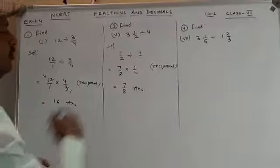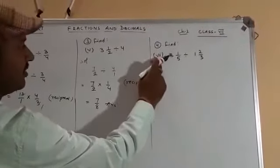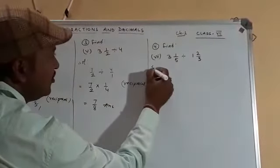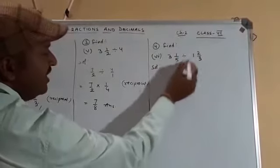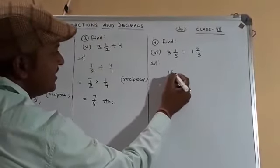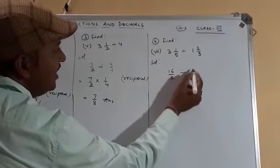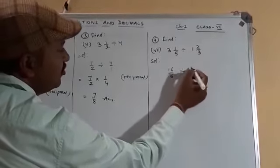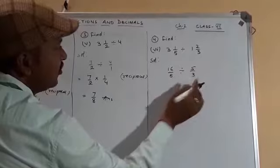Coming to the next part. Solution: convert mixed fraction to improper fraction. 3 times 5 equals 15, plus 1 equals 16, so 16 upon 5, divided by 2 2/3. Convert the second: 3 times 1 equals 3, plus 2 equals 5, so 5 by 3.